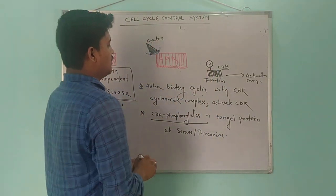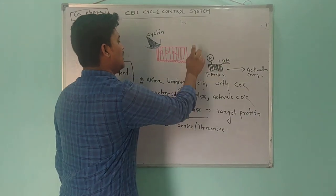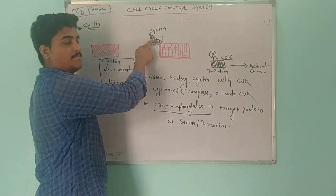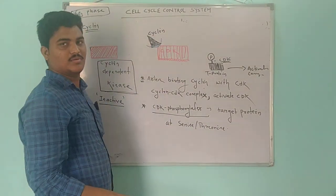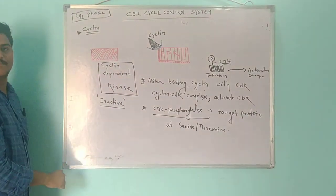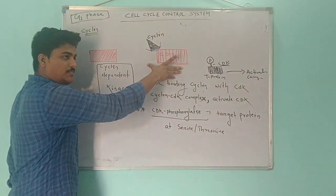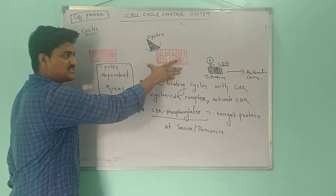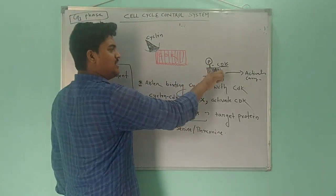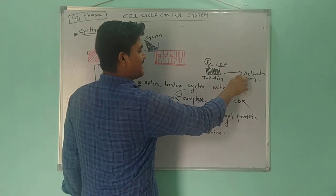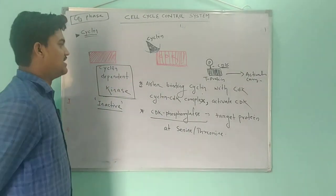However, CDK can phosphorylate the target protein only after it binds with the cyclin, forming the cyclin-CDK complex. Before that, CDK is in an inactive state. Binding of cyclin with CDK forms the cyclin-CDK complex, and after that CDK can phosphorylate the target protein. The active target protein can then perform any function required in the G1 phase of the cell cycle.